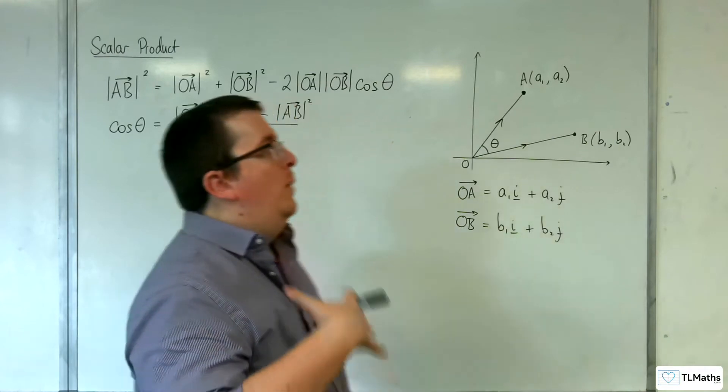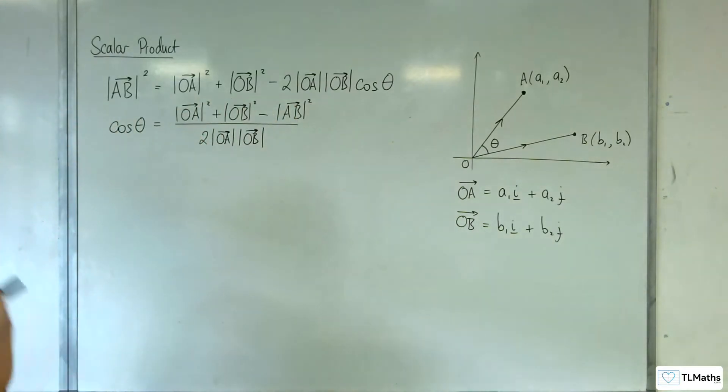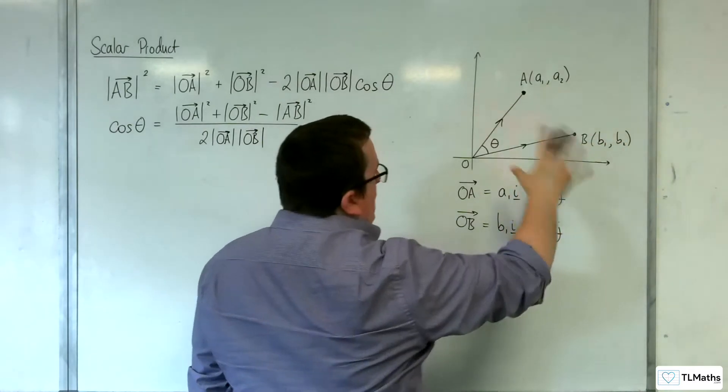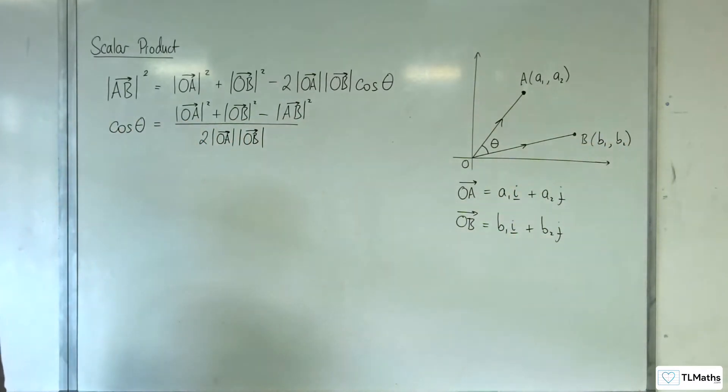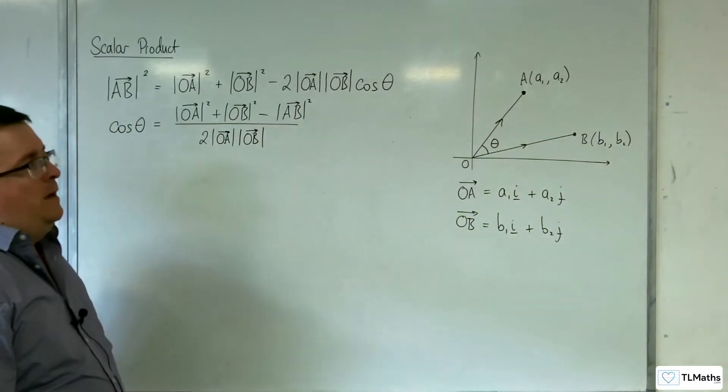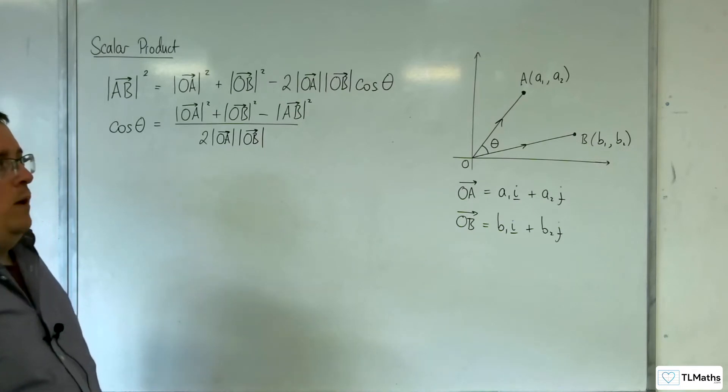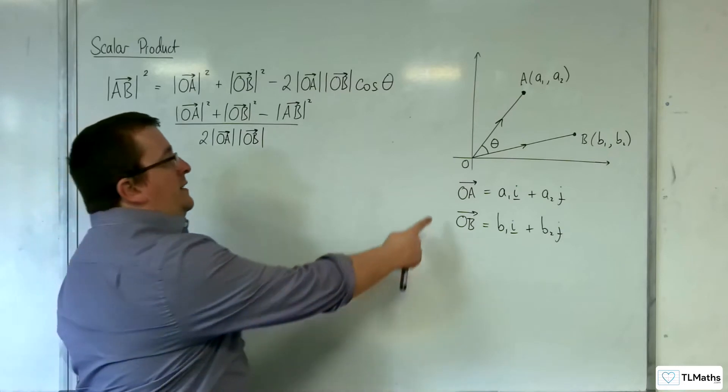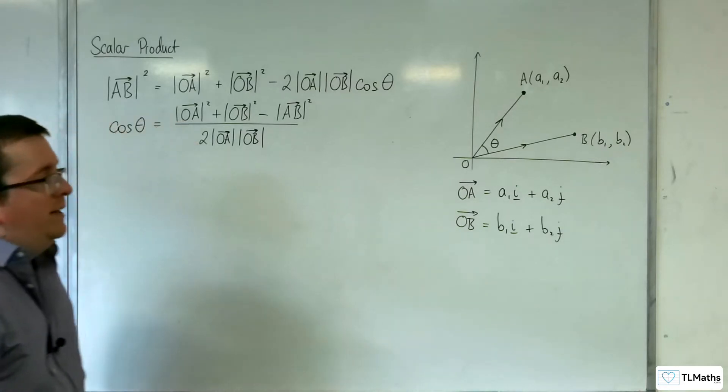So in the previous video, we went with a direct example, finding the angle between two points A and B. Now we're going to be generalizing it. We're keeping it in two dimensions. So A now has the coordinates A1, A2, and B has the coordinates B1, B2. So we've got the position vectors OA and OB there given in component form.